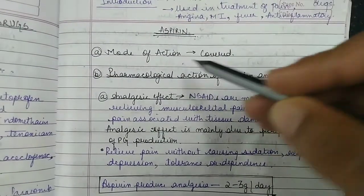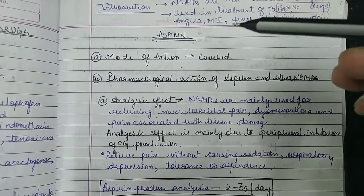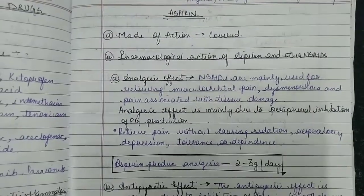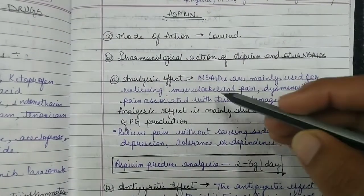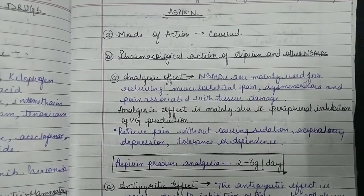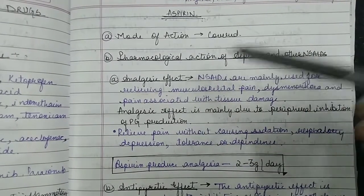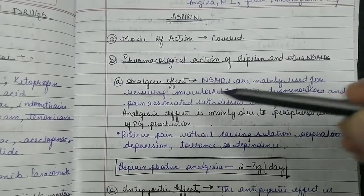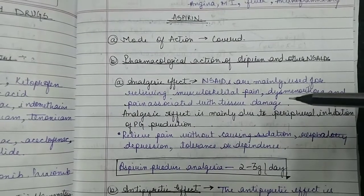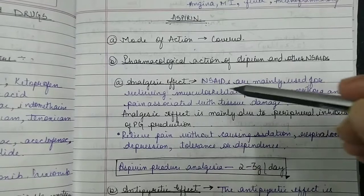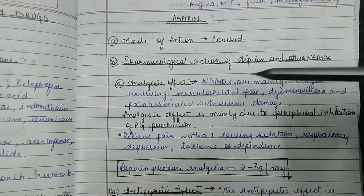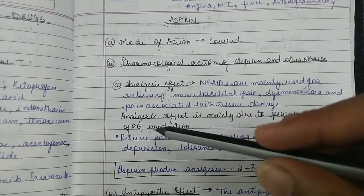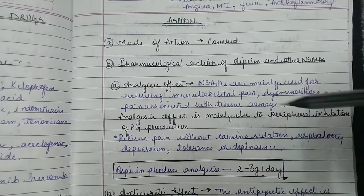The mode of action and classification were already covered previously. Now talking about the pharmacological actions of aspirin — firstly, aspirin has an analgesic effect. NSAIDs are mainly used for relieving musculoskeletal pain, dysmenorrhea, and pain associated with tissue damage.